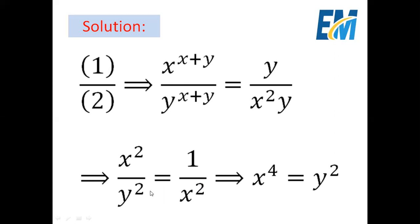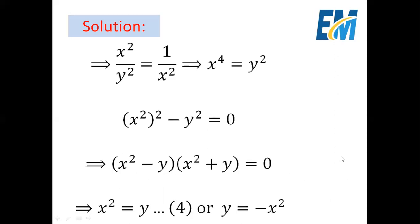Using cross multiplication we get x squared times x squared, which is x to the fourth, equals y squared. This can be rewritten as x to the fourth minus y squared equals zero, which factors as (x squared minus y)(x squared plus y) using the identity a squared minus b squared equals (a minus b)(a plus b).